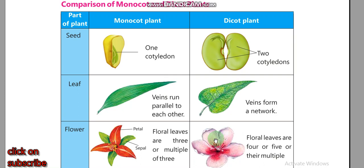We have now seen the classification and characteristics of plants. We will start our next topic with Chapter 1 of Unit 1.